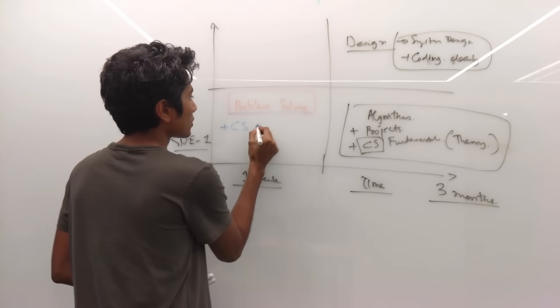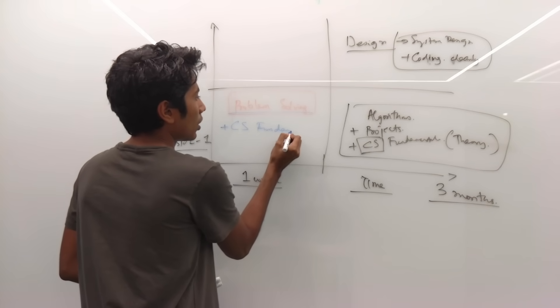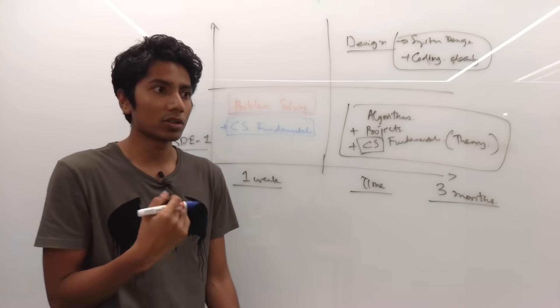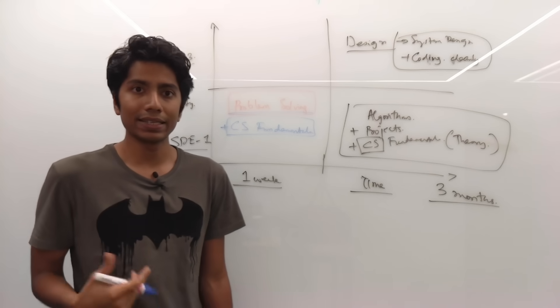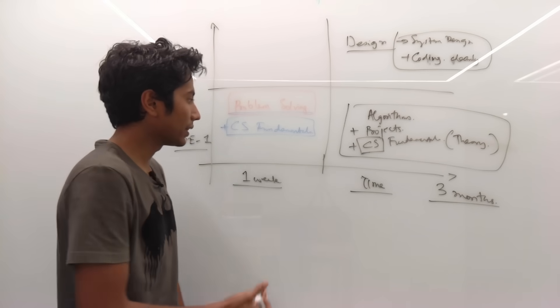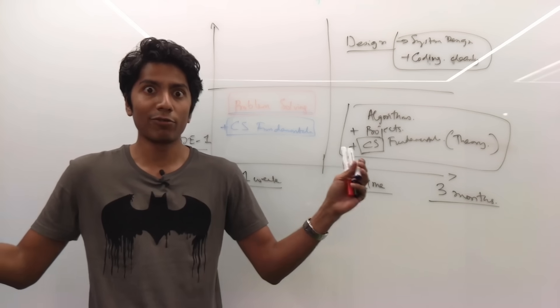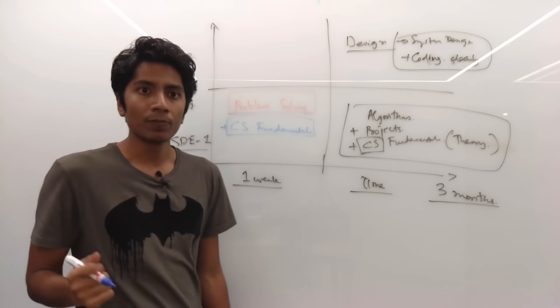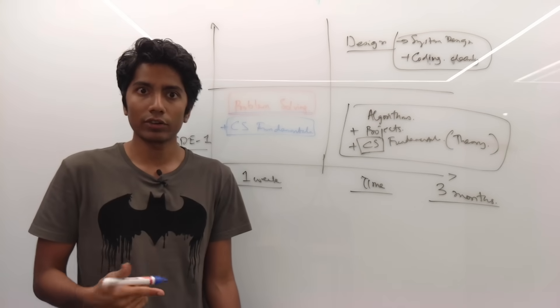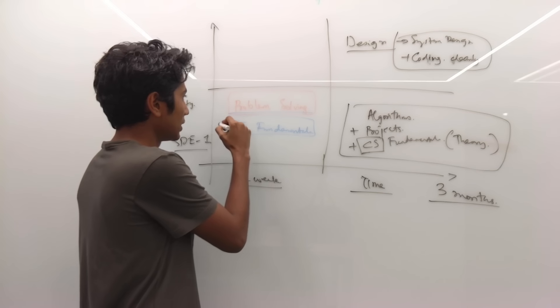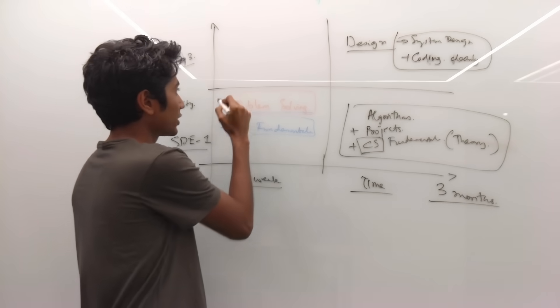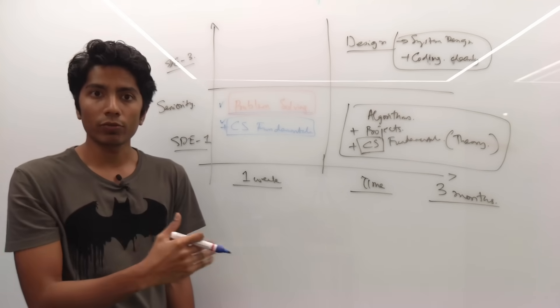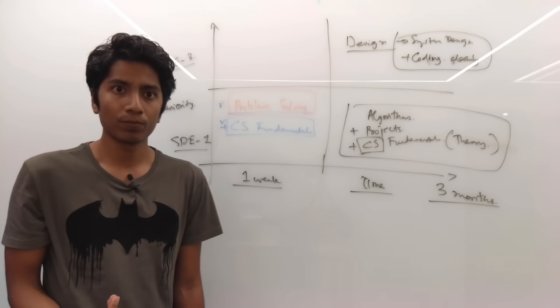The second thing is CS fundamentals. And when I say CS fundamentals, I literally mean fundamentals. Like how does a TCP handshake work? What is database indexing? If you don't know these things, then it's a very big red flag for the interviewer and you're unlikely to get hired if you don't know the CS fundamentals. So whichever branch you are from, if you're from computer science, electronics, whatever be the case, this thing should be done. Without this, the minimum bar for a software engineer is not going to be met.